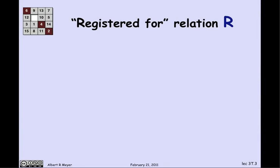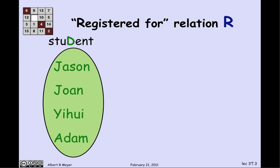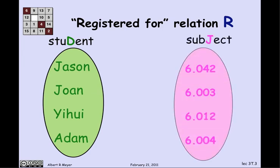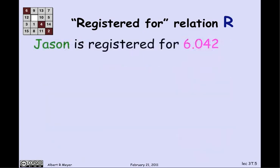Let's look at an example close to home: the 'registered for' relation, which is a relation between students — Jason, Joan, Yi-hui, and Adam — as the domain, and four subjects as the co-domain: 6042, 003, 012, and 004. The relation R is indicated by arrows showing which students are associated with which subjects, meaning they're registered for that subject. So there's a particular arrow connecting Jason and 6042, telling us Jason is registered for 6042.